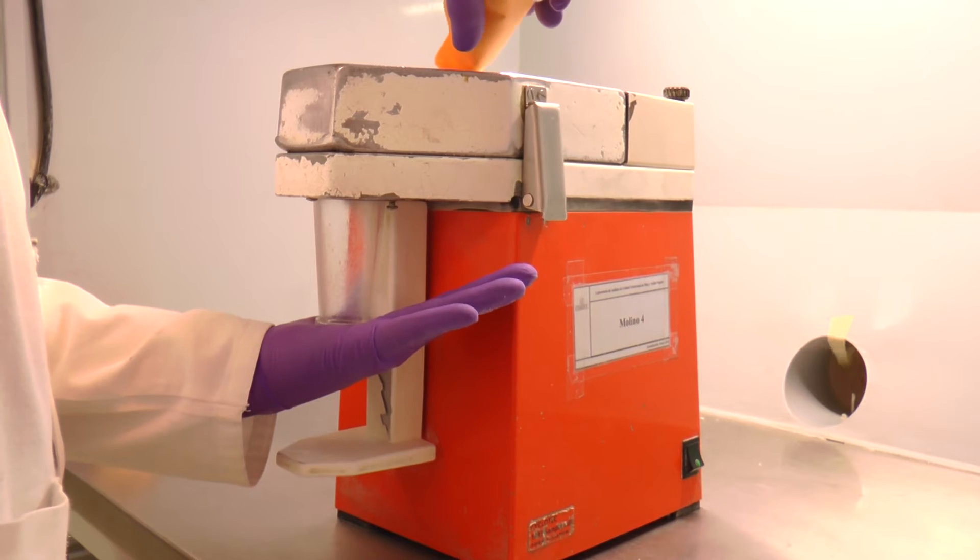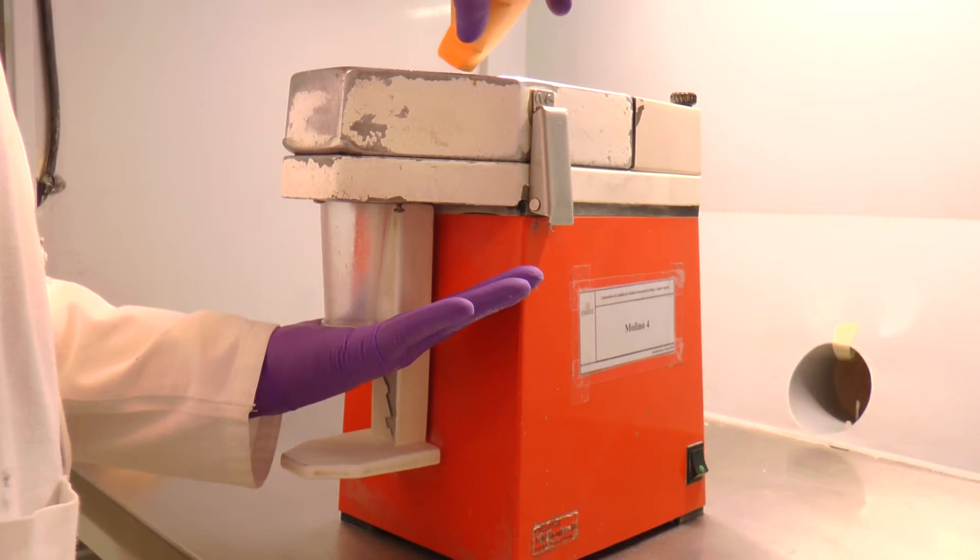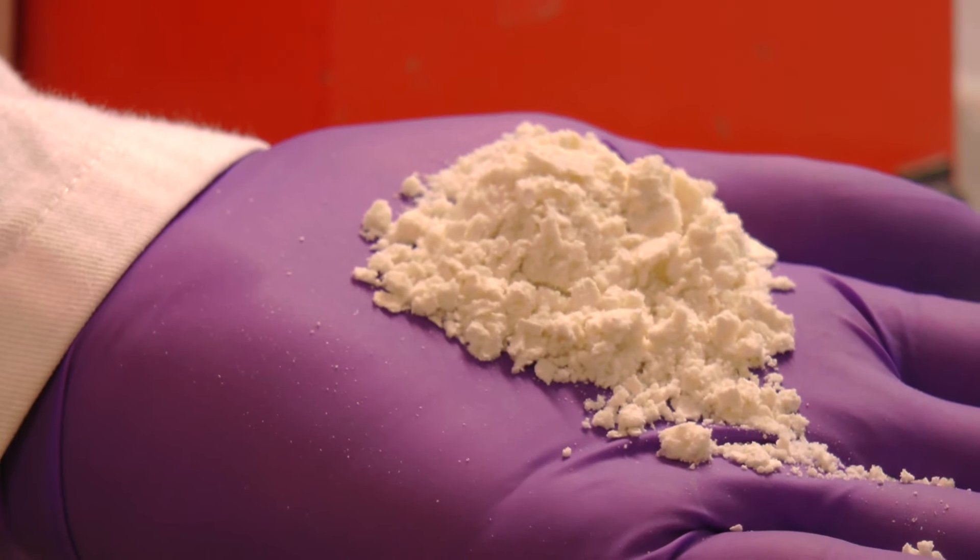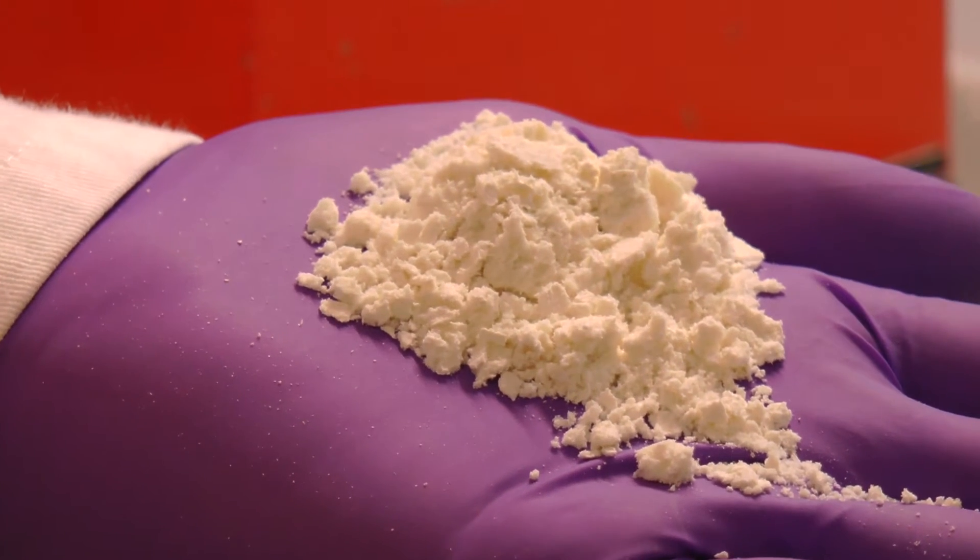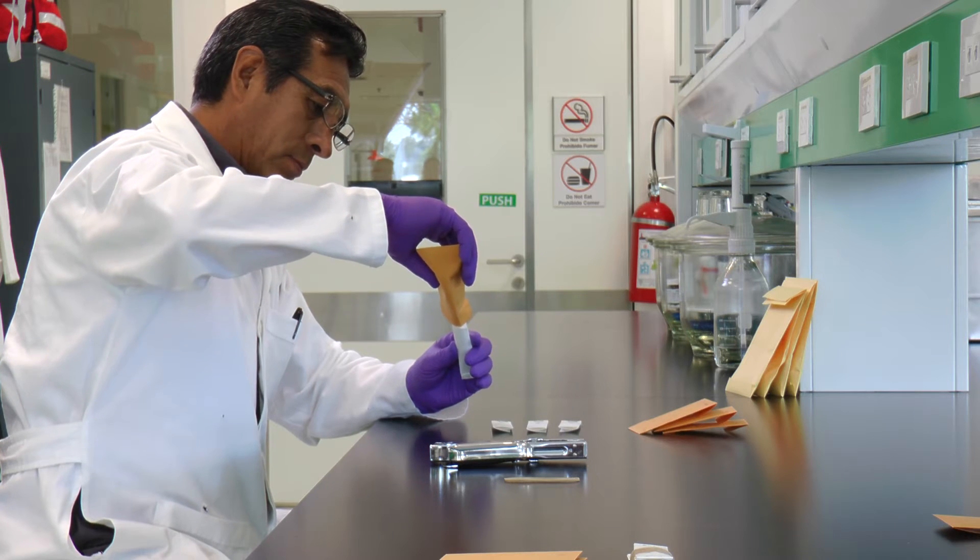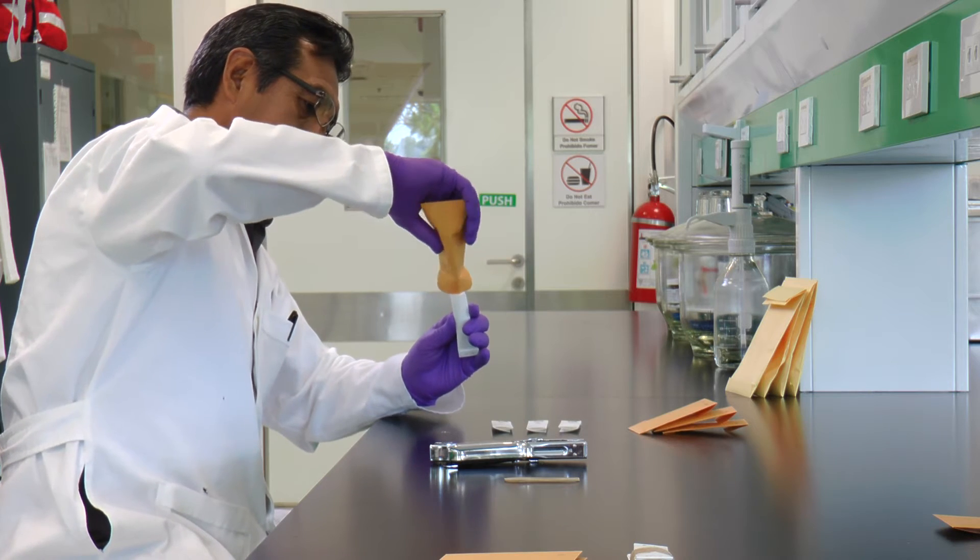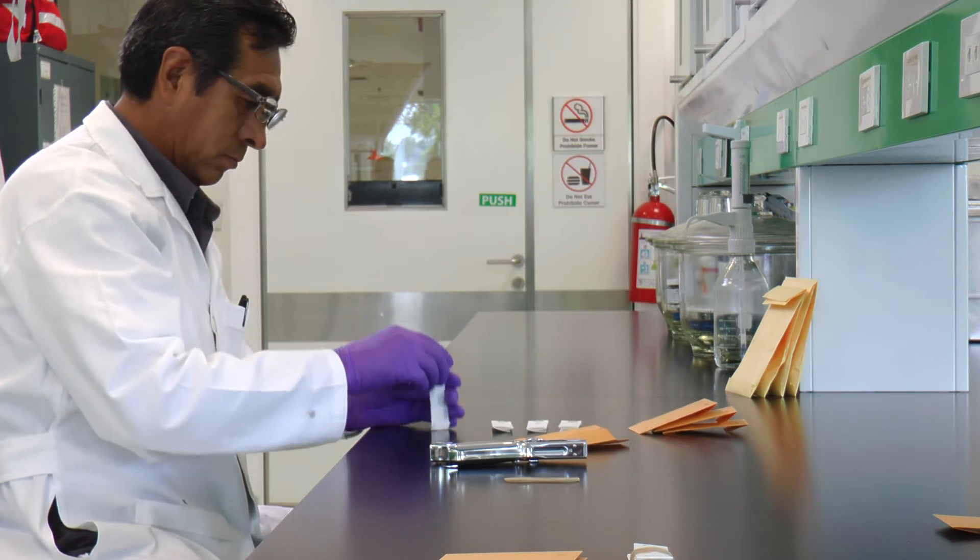The material is then ground in a cyclonic mill to obtain flour made up of particles less than 0.5 mm in size. Empty the flour into a filter paper cone labeled with the name of the sample to be analyzed.